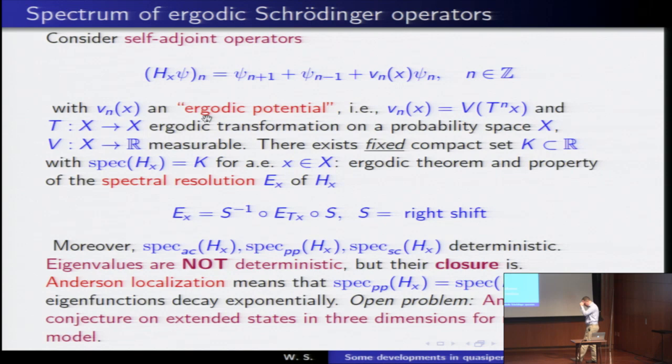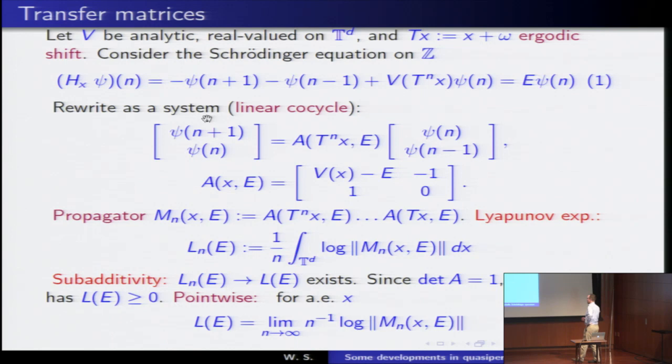The eigenvalues themselves are not deterministic, they're highly sensitive to the phase. But the closure of the eigenvalues is not random, that is deterministic. Anderson localization means precisely that the spectrum purely consists of eigenvalues and that moreover the eigenfunctions, you know, compact self-adjoint operator, but you're very far from the compact case here obviously, that you have a basis of L2 and that they decay exponentially.